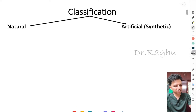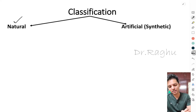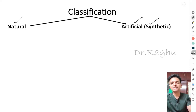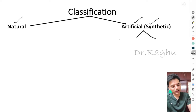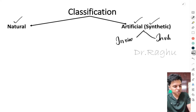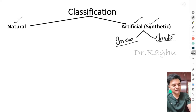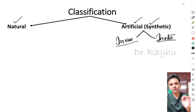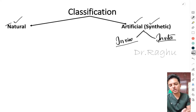Anticoagulants are broadly classified into two varieties: naturally occurring anticoagulants, which occur in the body, and artificial or synthetic ones. The synthetic anticoagulants are further subclassified into two varieties: in vivo — used on patients — and in vitro — used in labs during blood sample collection. We will cover the natural anticoagulants first.